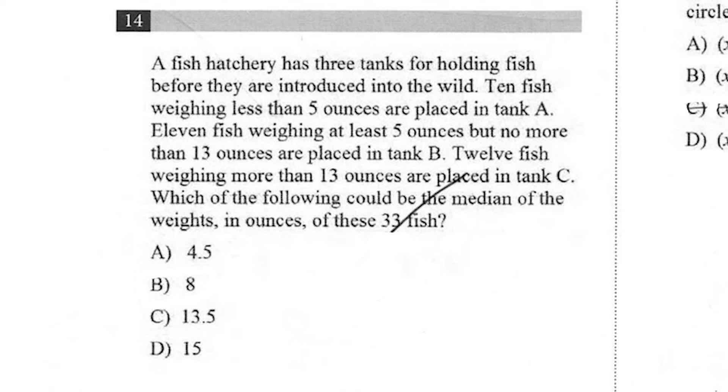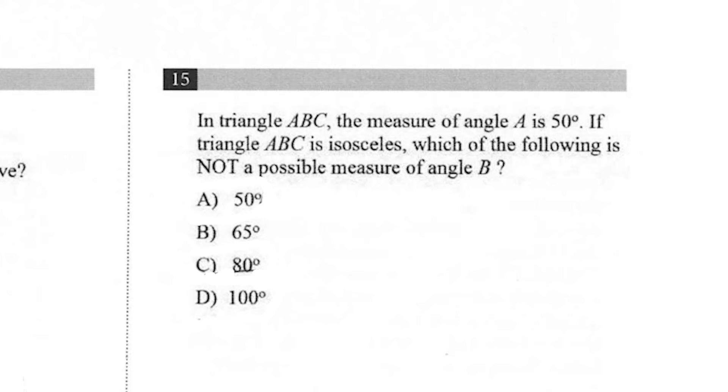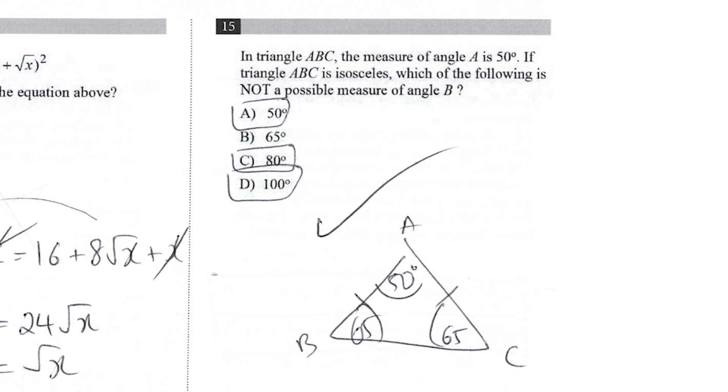10 fish weighing less than five ounces are placed in tank A. So we have 11 fish where their range is between at least five, but less than 13. I feel like there's a trick question. So it's going to be eight. It's the only one that's in that range. In triangle ABC, the measure of angle A is 50 degrees. Angle A is 50 degrees. If triangle ABC is isosceles. Oh, easy. So anything but 65. So three answers.